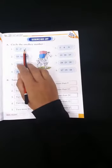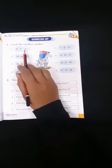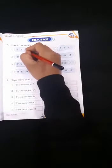Now children, tell me which number is smallest here. Yes, number 2. Therefore, we will put circle on 2.